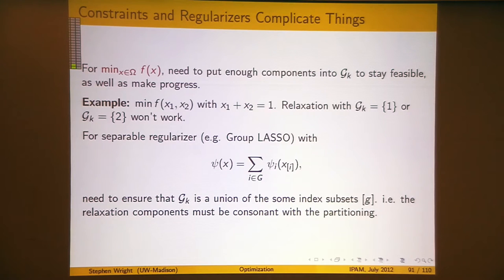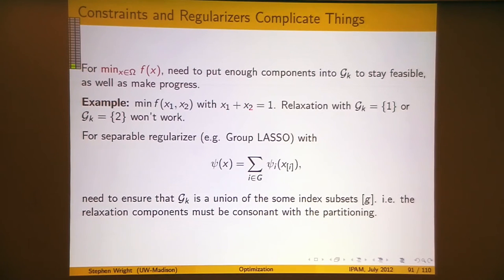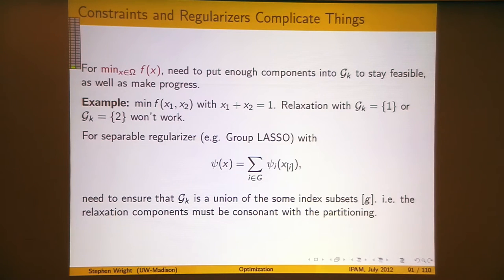I want the constraint to continue being satisfied. You can see right away that I can't move — if I'm satisfying this constraint and I'm fixing x2, I can't change x1 without violating the constraint. Clearly, you have to either make sure the sets you choose are big enough to be consistent with the constraints and allow you to make a step, or you have to allow constraint violations — there's something you need to do to fix it up.